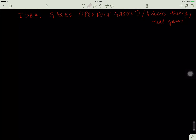Before we start our discussion on equations of state, I think it's really important for you to understand what an ideal gas is, where does this concept come from, and what's a real gas? The word ideal — it kind of signals to you that you can't reach that state.